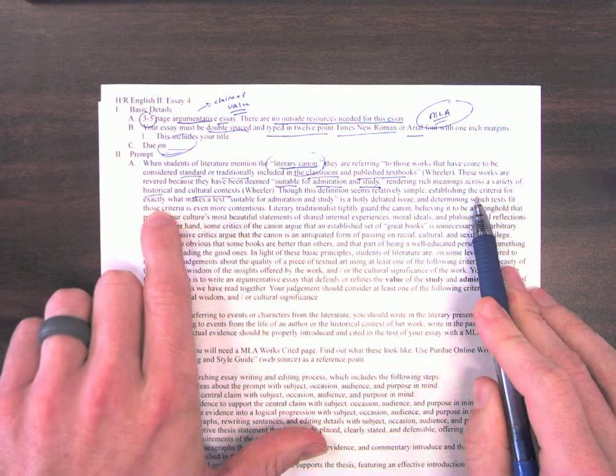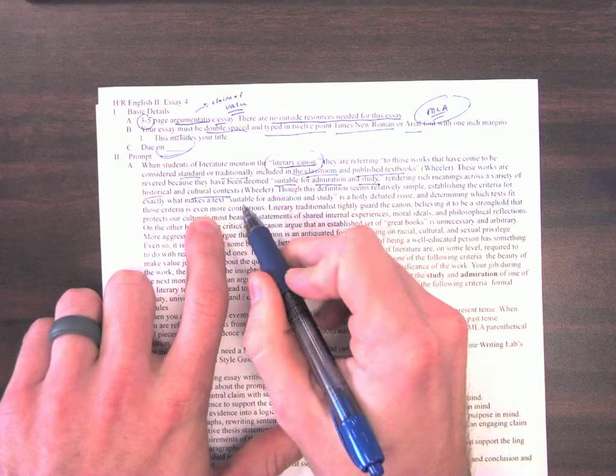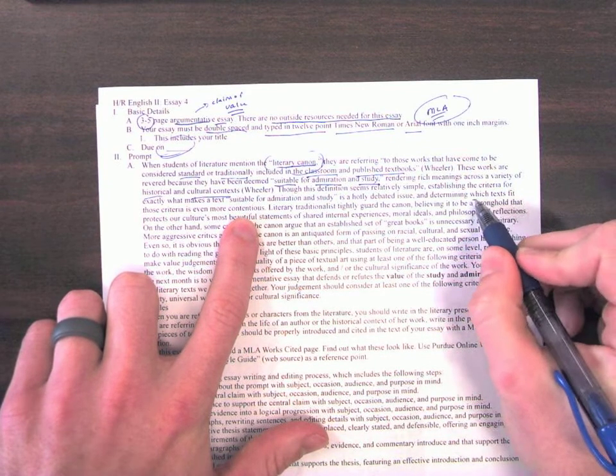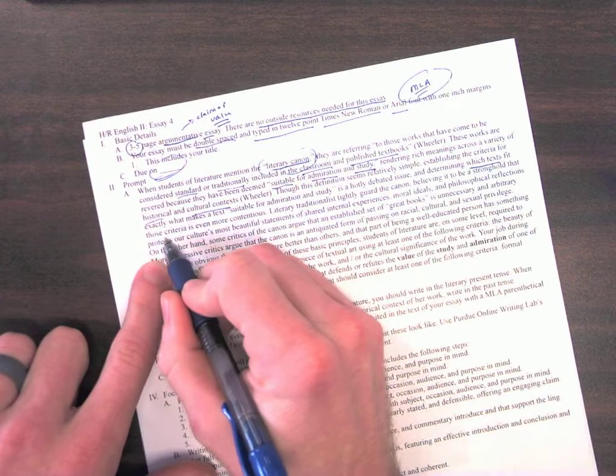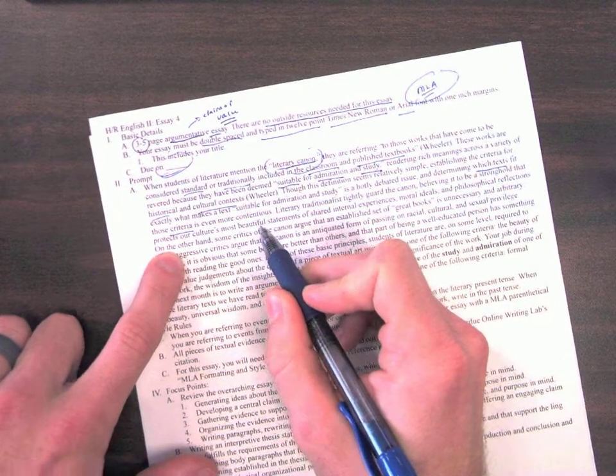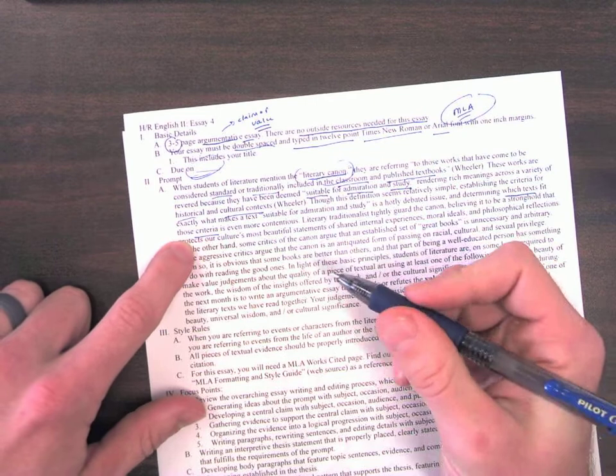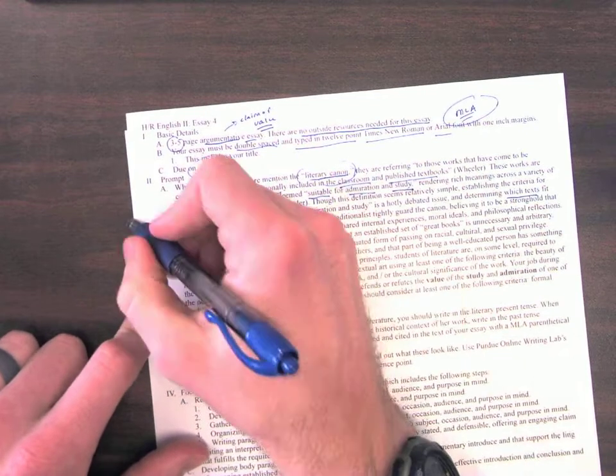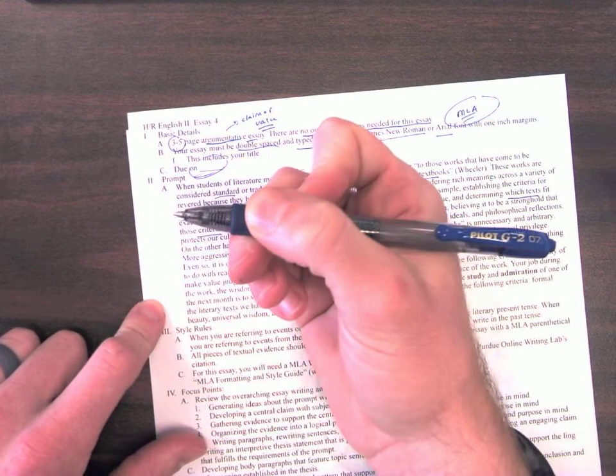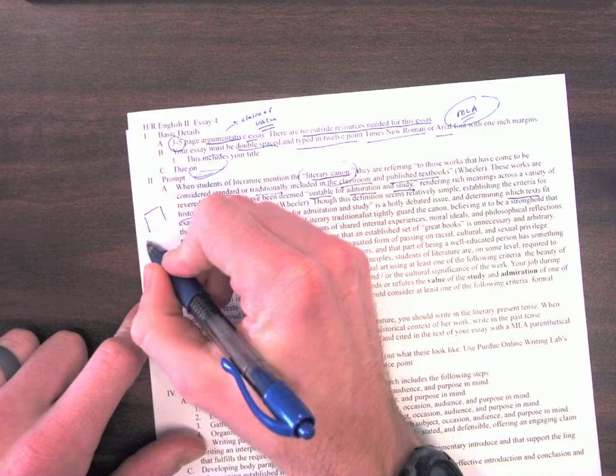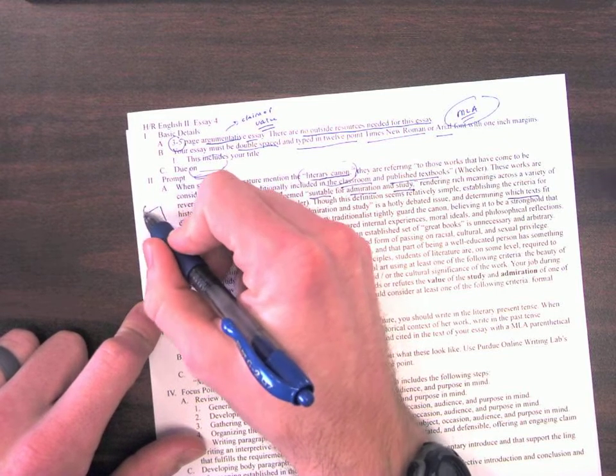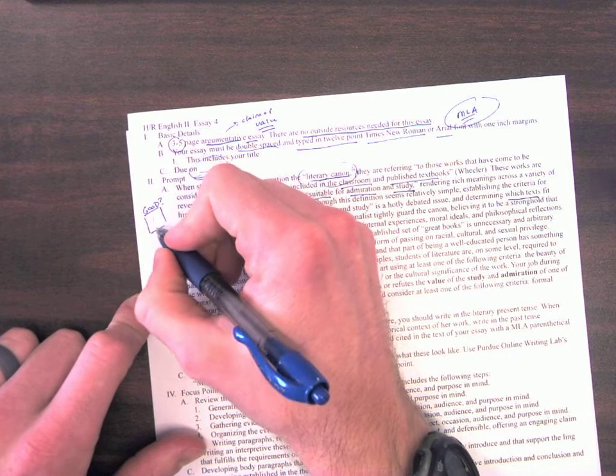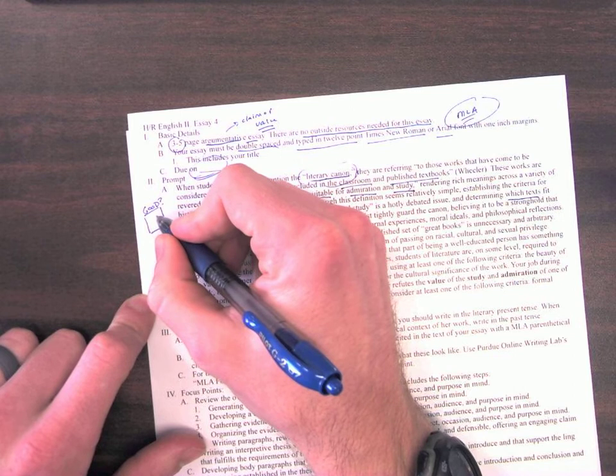The standard or traditional works that have been studied over and over again in schools by students because they have been deemed worthy of admiration. Though this definition seems relatively simple, establishing the criteria for what exactly makes a text, quote, suitable for admiration and study, is hotly debated. And determining which books fit those criteria is even more contentious. So the two things that people tend to argue about when it comes to what books students should read in school, essentially, is what are the parameters that define a good book. So what is the box that a good book fits in, and then we've got to define which books fit in this box.